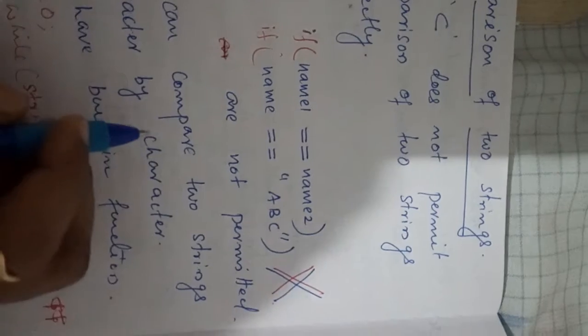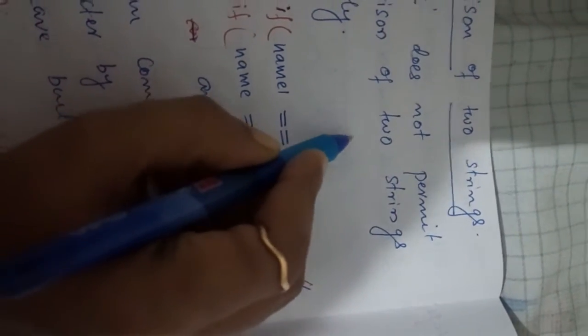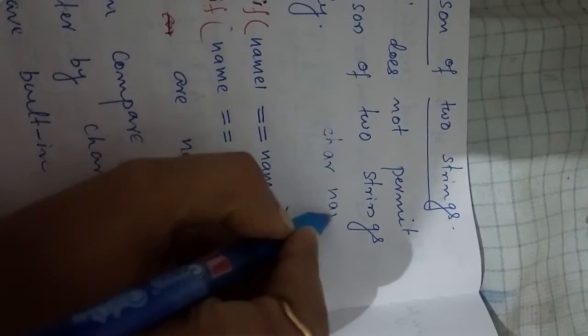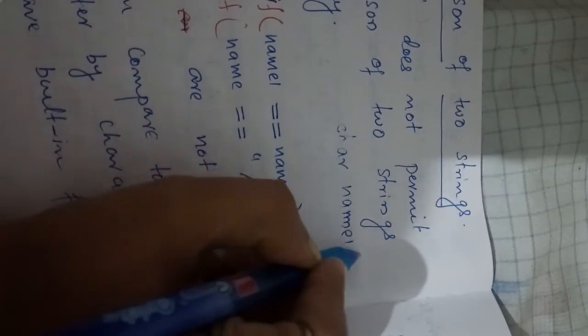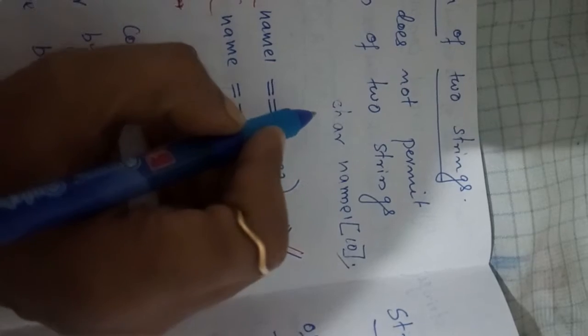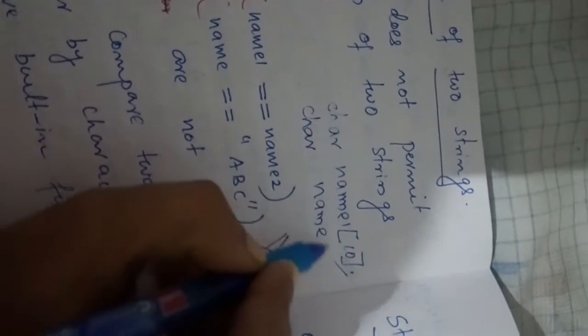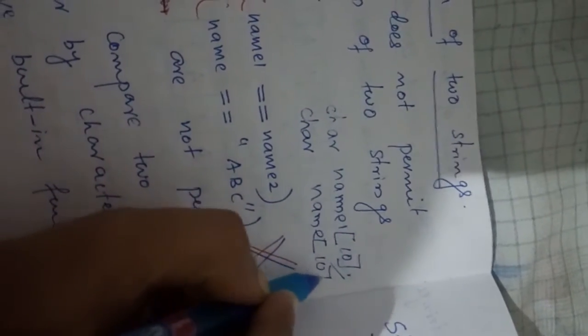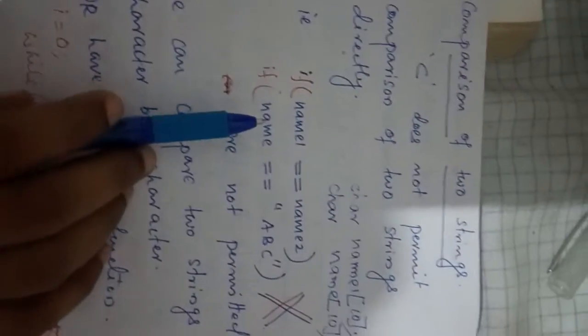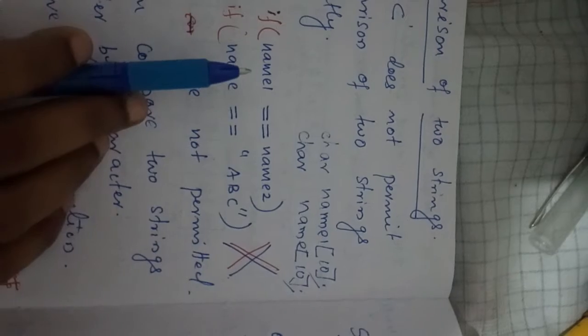name1 is declared as char name1 of N — it is a character array. Likewise, char name of 10 is also a character array. So name and name1 are character arrays, or string variables.